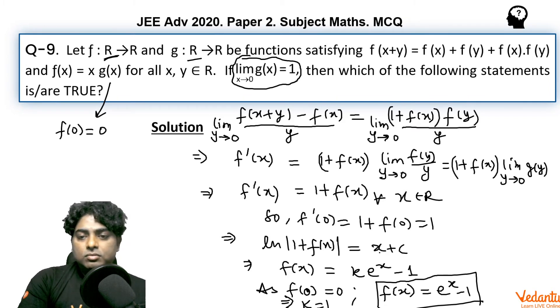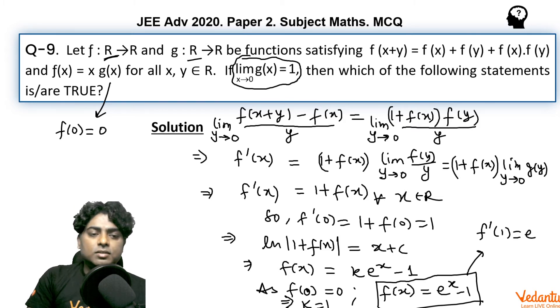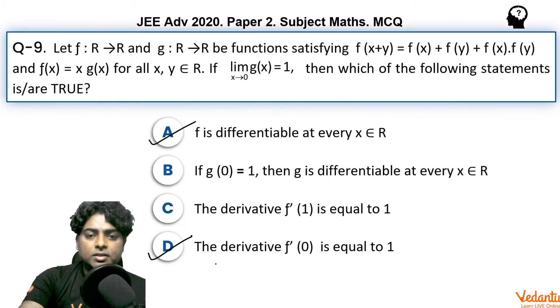Now coming to, we can verify option C from here that f'(1) would be e, but in the option it was given f'(1) is equal to 1. So option C is not correct.